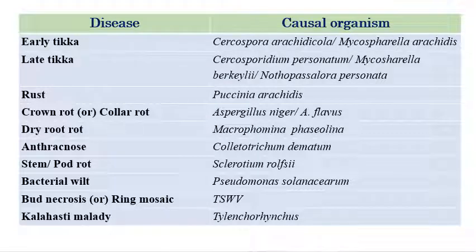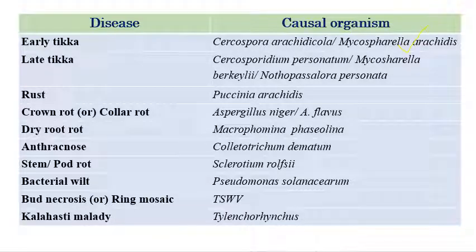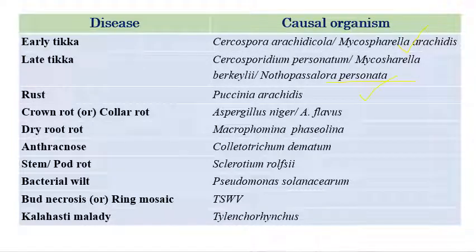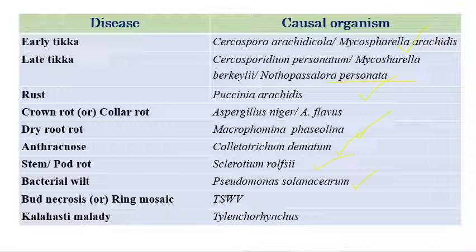The important diseases in groundnut are: Early Tikka caused by Cercospora arachidicola or Mycosphaerella arachidis; Late Tikka caused by Cercosporidium personatum or Mycosphaerella berkeleyi; Rust caused by Puccinia arachidis; Crown rot or Collar rot caused by Aspergillus niger or Aspergillus flavus; Dry root rot by Macrophomina phaseolina; Anthracnose by Colletotrichum dematium; Stem rot or Pod rot by Sclerotium rolfsii; Bacterial wilt by Pseudomonas solanacearum; Bud necrosis and Ring mosaic by Tomato Spotted Wilt Virus; Kalahasthi malady, a nematode disease caused by Tylenchorhynchus.